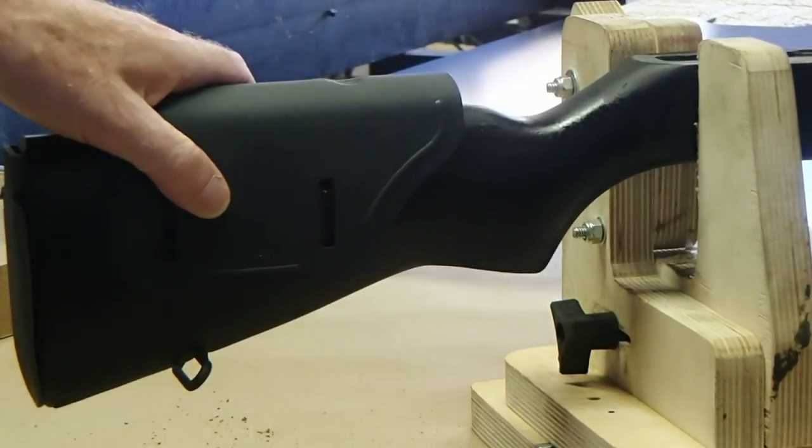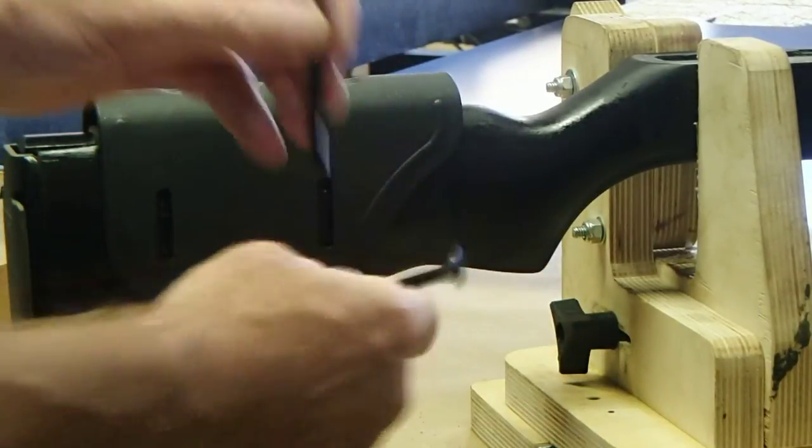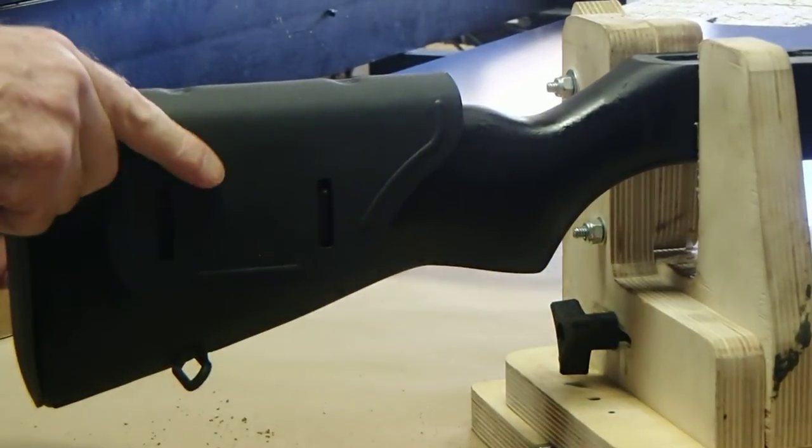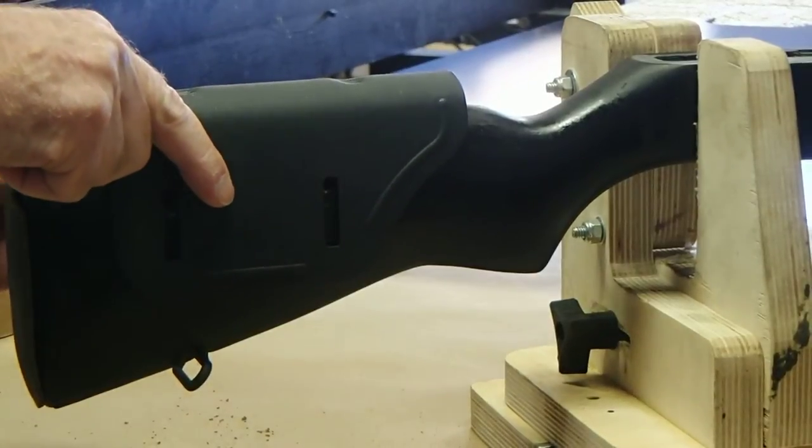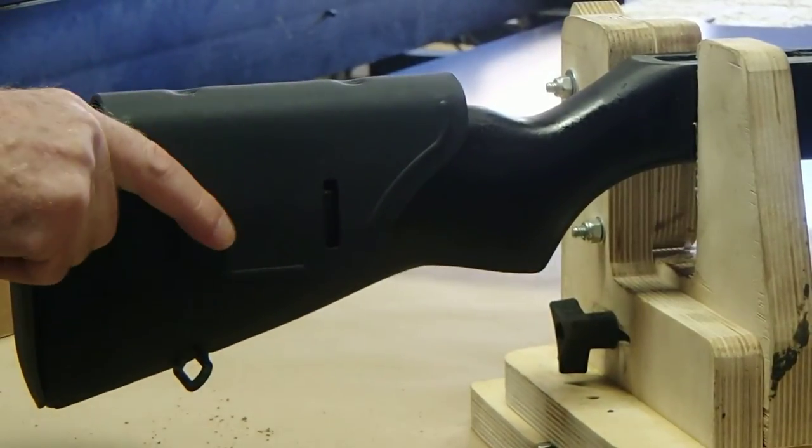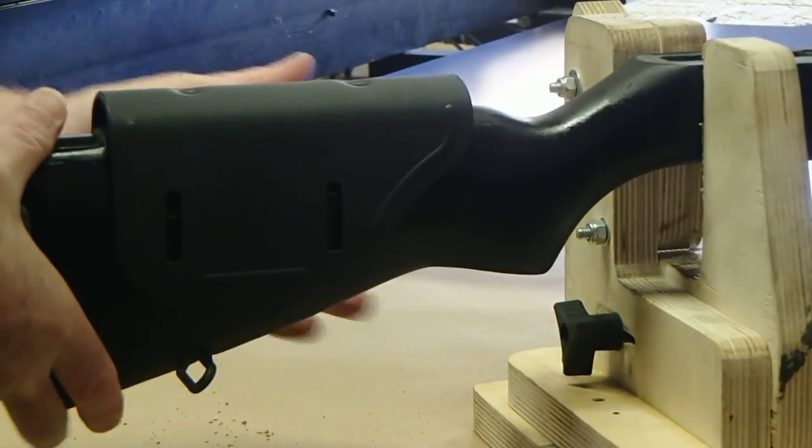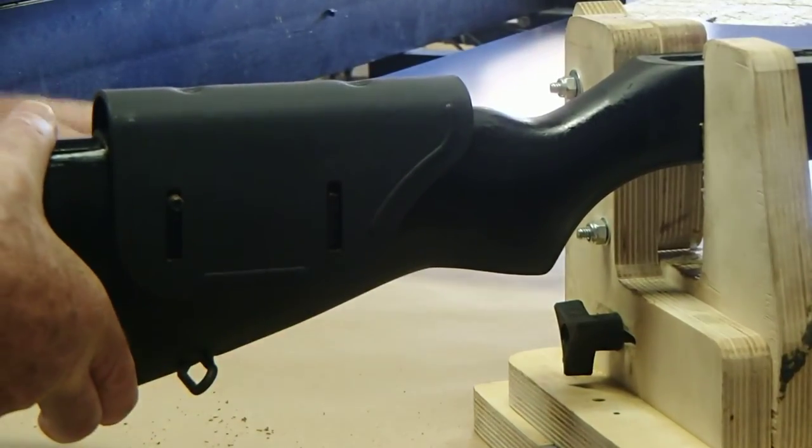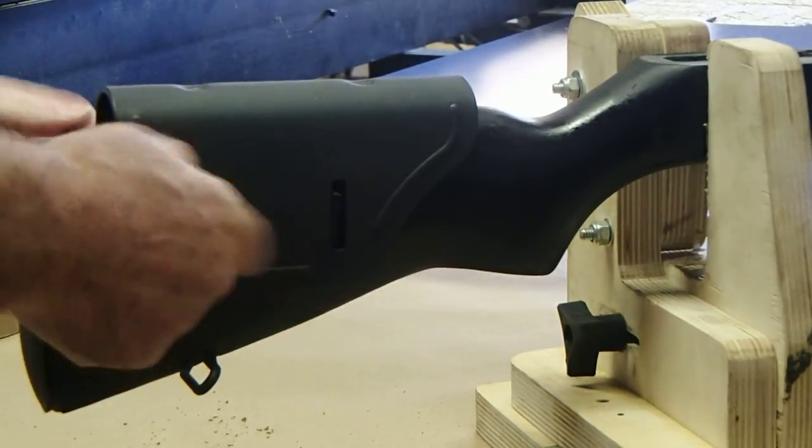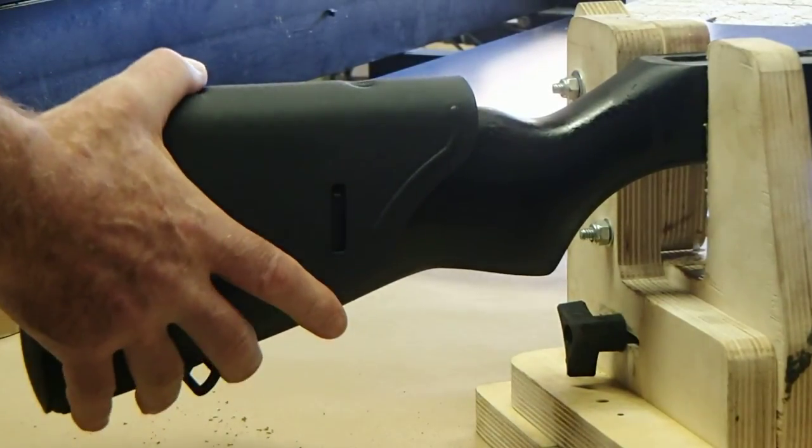Next, place the cheek-rest on the stock. Insert the bolts. If you're right-handed, you insert the bolts from the left side. If you're left-handed, you insert the bolts from the right side.